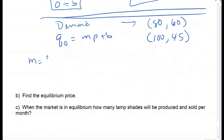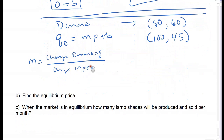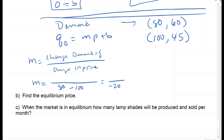Slope is my change in demand over the change in price. The change in price is 80 minus 100, which is negative 20. For demand: at the lower price of $80 he can sell more—60 minus 45 equals 15. So my slope is 15 over negative 20, which comes out to negative 0.75.